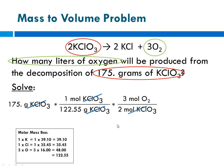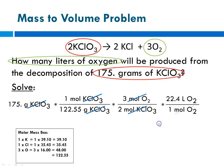Moles of potassium chlorate will cancel out. Now we're at moles of oxygen, and to get from moles of oxygen to liters of oxygen, we're going to multiply by molar volume: 22.4 liters of oxygen for every 1 mole of oxygen. Moles of oxygen will cancel out. Plugging into our calculator: 175 divided by 122.55, times 1.5, times 22.4 — and we get 47.98 liters of oxygen.